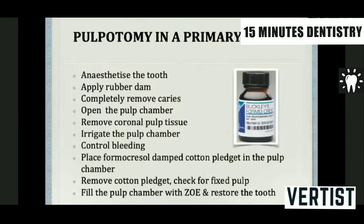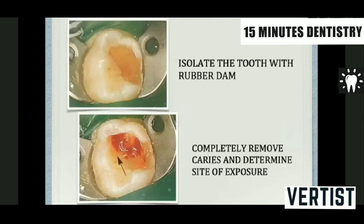For pulpotomy in a primary tooth with Buckley's formocresol at 20% (one-fifth concentration): first, anesthetize the tooth and application of rubber dam is mandatory. Then completely remove the caries, open the pulp chamber, remove the coronal pulp tissue, irrigate the pulp chamber preferably with sodium hypochlorite. Control the bleeding with a moist cotton pellet, place a formocresol-dampened cotton pellet into the pulp chamber, remove it after four minutes, check for pulp fixation, and proceed with restoration.